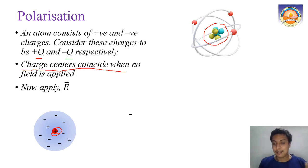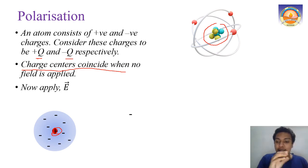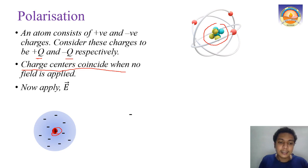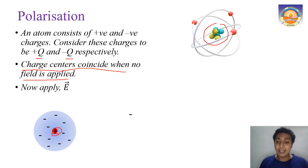We previously established that even though negative charge is distributed all around the atom, it is equivalent to placing that charge at the center. So we say the charge centers coincide when there is no applied field.